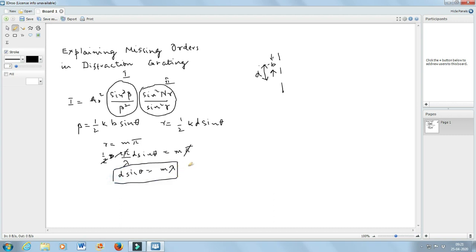Now, what happens in the single slit? Let us try to see what happens in the single slit. For the single slit, whenever beta is equal to mpi or I can write npi,